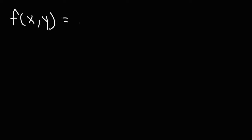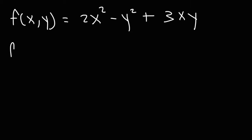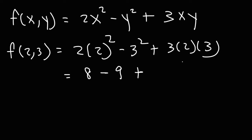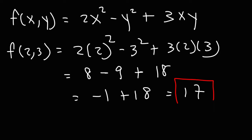Sometimes you may have a multivariable function. For example, f of x comma y equals 2x squared minus y squared plus 3xy. What is f of 2 comma 3? Just replace x with 2 and y with 3. So 2 times 2 squared is 8, 3 squared is 9, and 3 times 2 times 3 is 18. Then 8 minus 9 is negative 1, and negative 1 plus 18 is 17. That's how you evaluate a multivariable function.